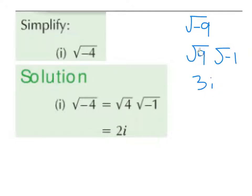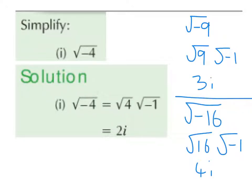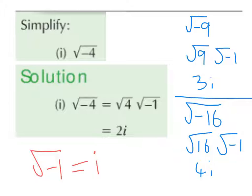So 9 and 4 are square numbers, and they always go first. The square root of minus 16 we break down to be the square root of positive 16 multiplied by the square root of minus 1, because 16 multiplied by minus 1 is minus 16. The square root of 16 is 4, and the square root of minus 1 is i. The square root of minus 1 is always equal to i — we need to learn this off by heart. The letter i represents imaginary.